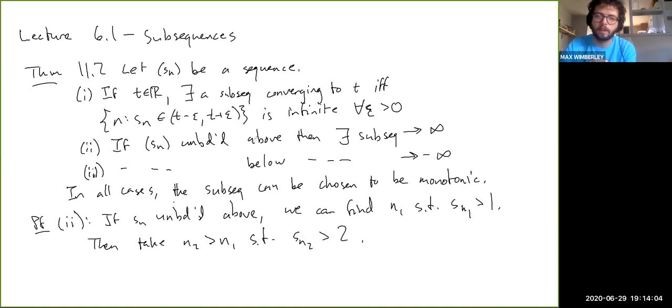So I'm actually just going to describe the proof of two first. So for two here, if SN unbounded above, we can find N1 such that SN1 is greater than one, right? I mean, otherwise one would be an upper bound. Then take N2 greater than N1 such that SN2 is greater than two, right? So the reason we can find N2 bigger than N1 for which this is true, which by the way, that's important, the reason we can find, because we need to choose the subsequence in ascending order of indices, right? The indices have to go up.